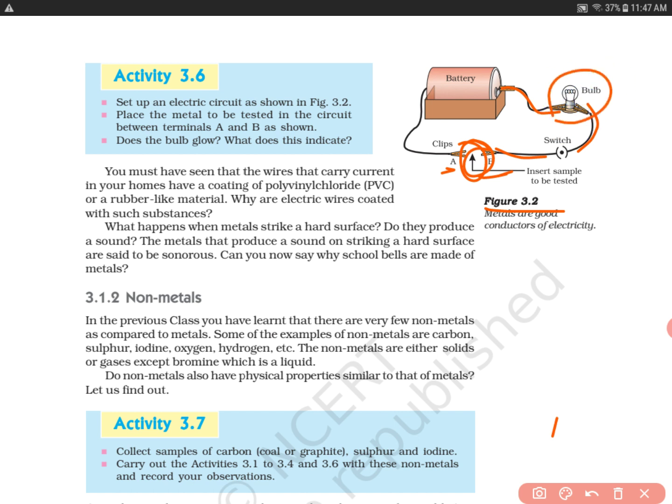Your bulb will glow. If you place rubber between these clips, the bulb will not glow. They're asking: place the metal to be tested between terminals A and B. Whether it's copper wire or iron wire, when you place it between the clips, does the bulb glow? Yes, the bulb glows. What does that indicate? It indicates that metals are good conductors of electricity.